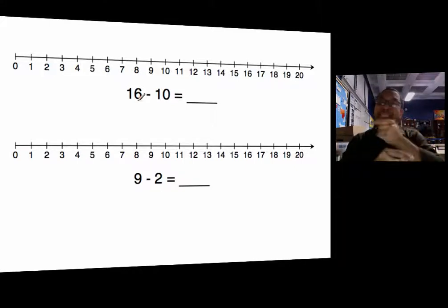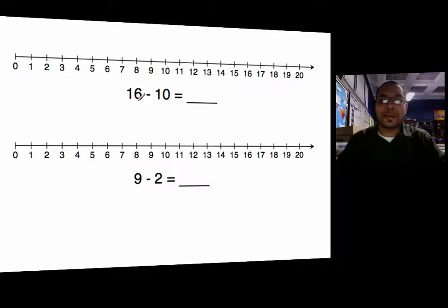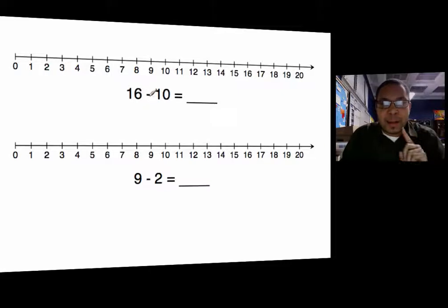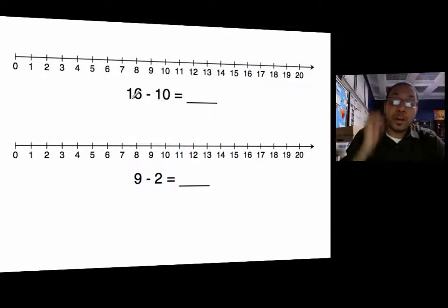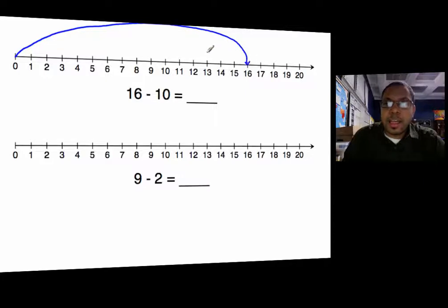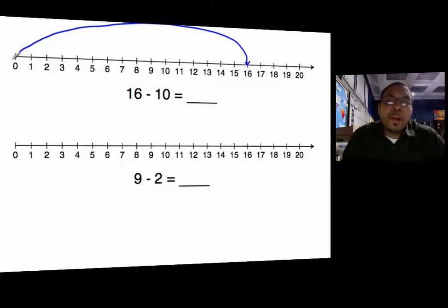Please ignore the first part of this video where I'm going in the wrong direction — this is where your left is when you're watching a video recorded for the internet. So we're looking at the problem 16 minus 10 equals what. We can use the number line to model that. The first thing I'm going to do is start at 16 — which is the distance from 0 to 16 — so I'm going to start at 0 and draw an arrow from 0 to 16. You don't always have to go from 0 to 16, but if you're trying to model every move you make, then you would.